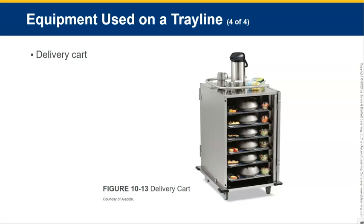The last thing needed in a traditional tray line system is the delivery cart. The one shown in this picture is just a traditional delivery cart — it's not heated, not cooled. You simply load the tray into the cart and bring it to the floor. There are other types of delivery carts that can keep food cold or keep food hot, and which type you purchase depends on how far a distance you're traveling.